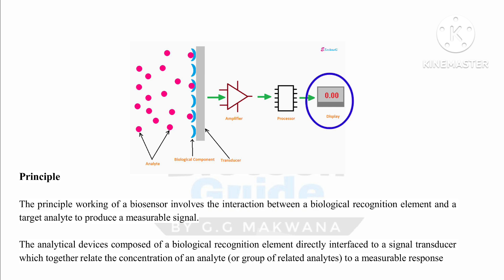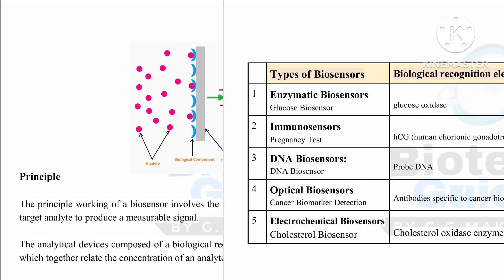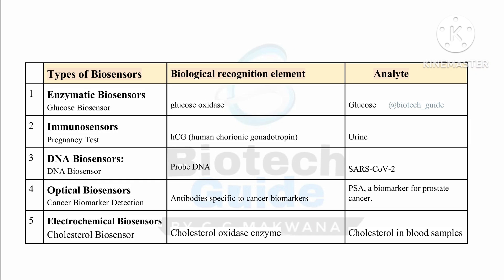This is the basic mechanism. On the basis of types of analyte and their recognition element, many types of biosensor exist. In today's video lecture, we are going to discuss about these five types of biosensor. Let us discuss them one by one.